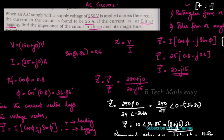We have found the answer: Z equals 10 ohms. The question asked us to find the impedance given the current, power factor lagging, and the circuit conditions. We have solved the equation and answered the question.